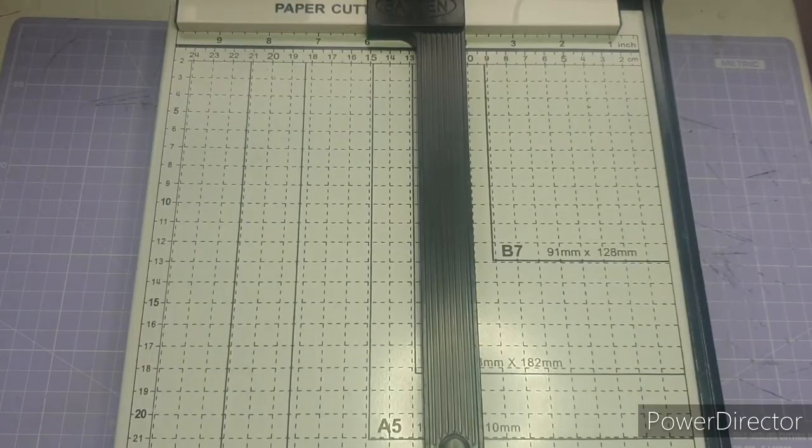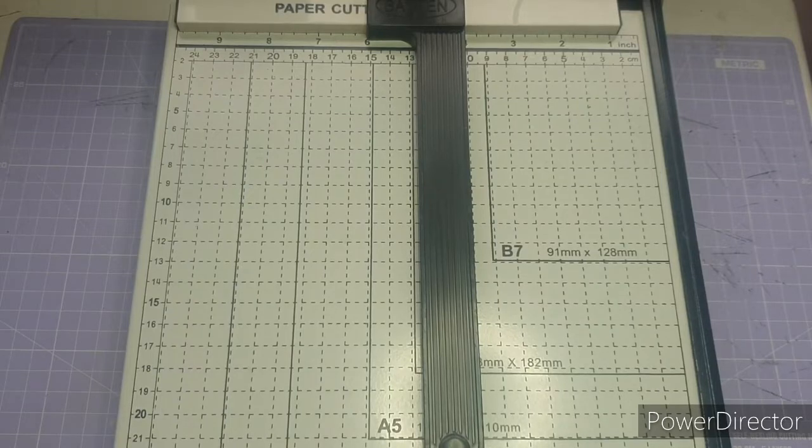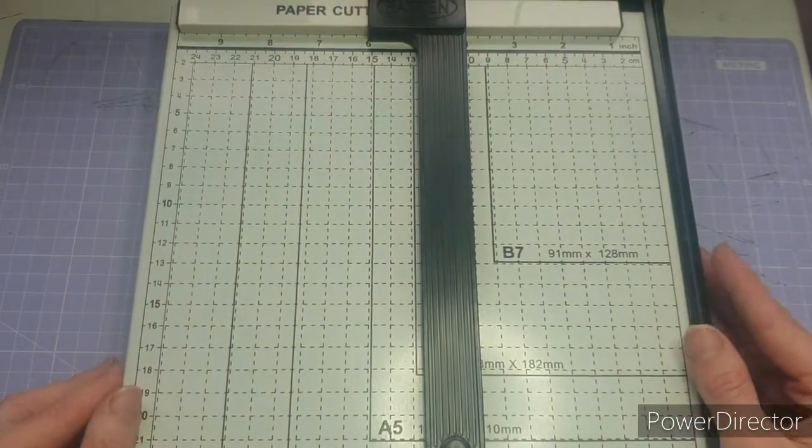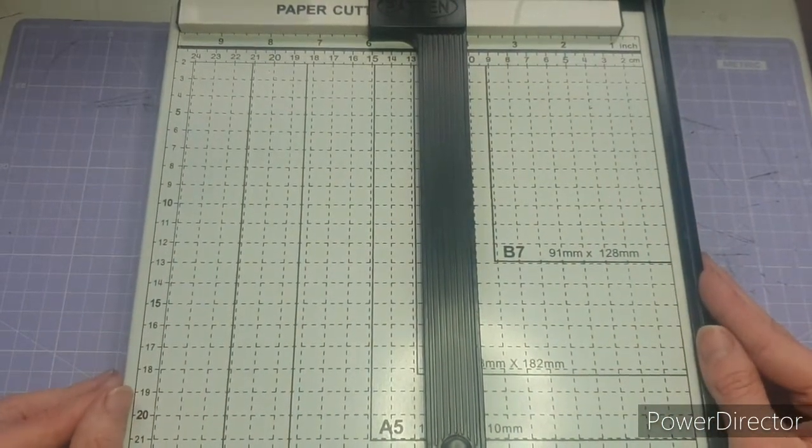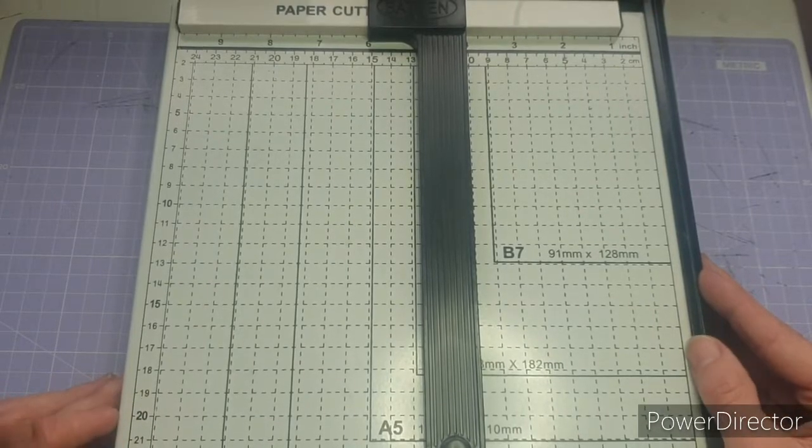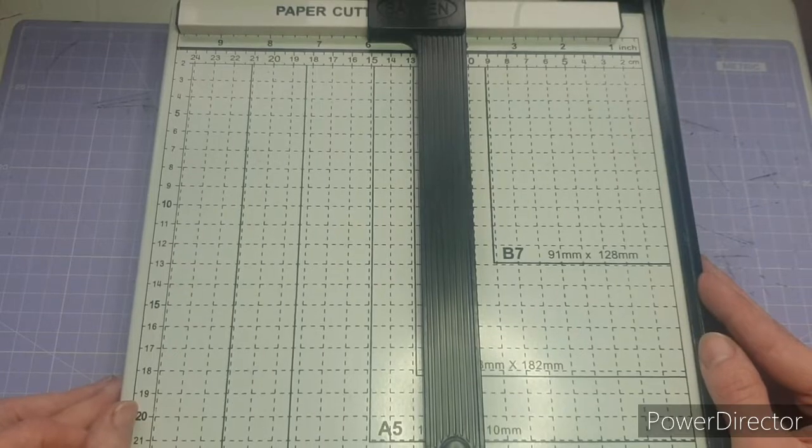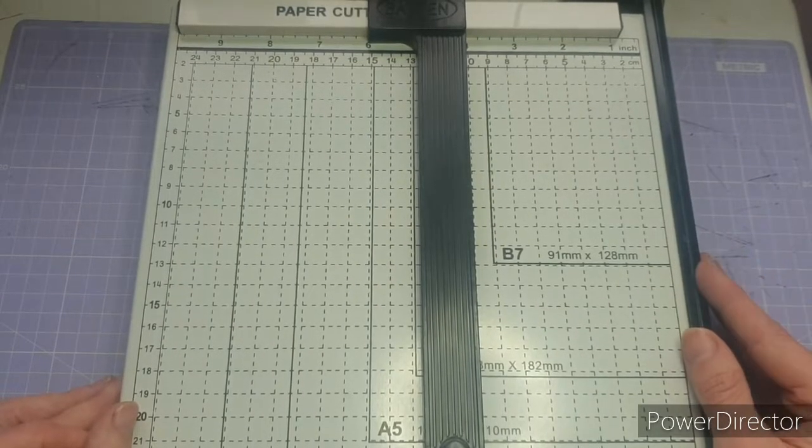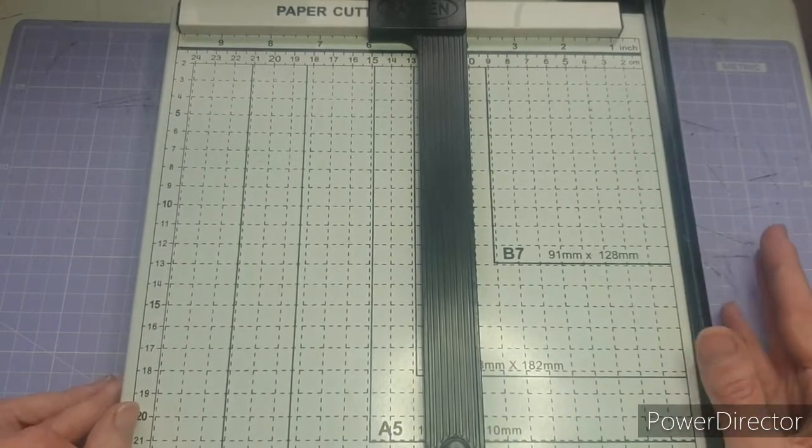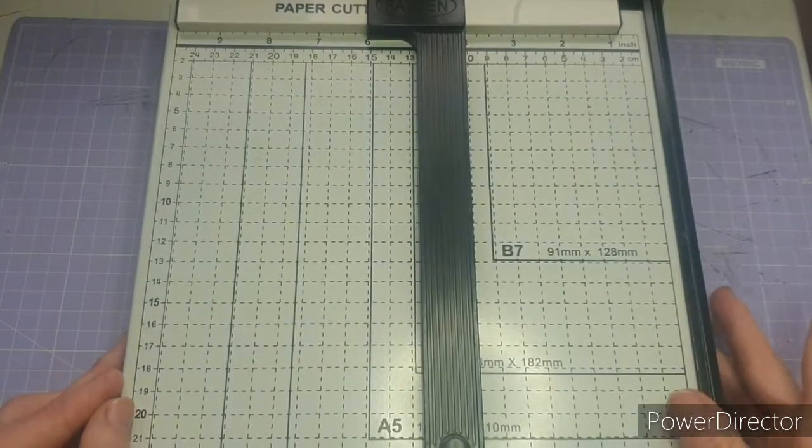Hello everybody, welcome back to my channel. Today I'm going to be doing a review on this paper cutter. This is something that I bought in March 2020. It came from eBay and when I purchased it, it was under nine pounds. The delivery was definitely free because that's something I always look for on eBay.